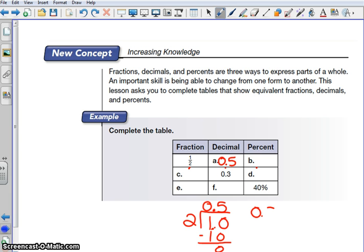When we have 0.5, in order to change it into a percent, we multiply it by 100%. And we turn this back into a fraction, and that's five tenths. So we do five tenths times 100%.